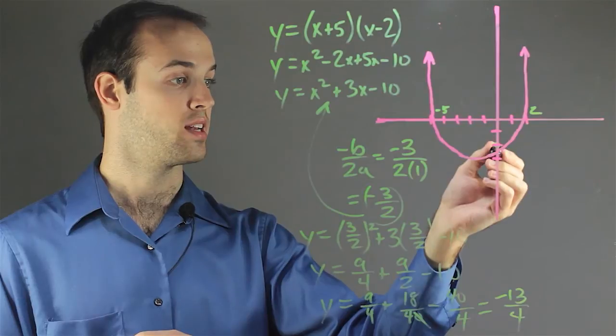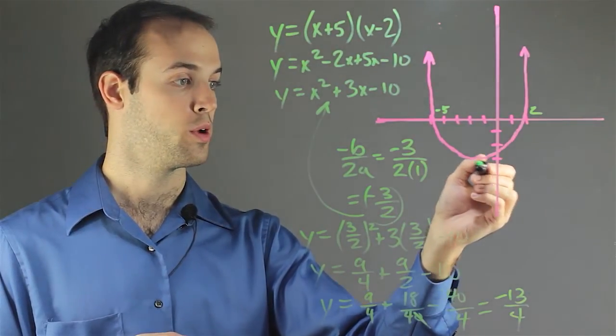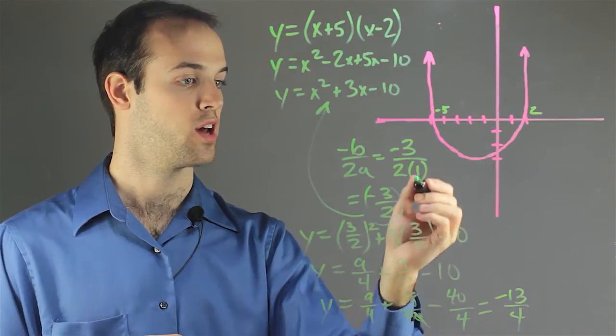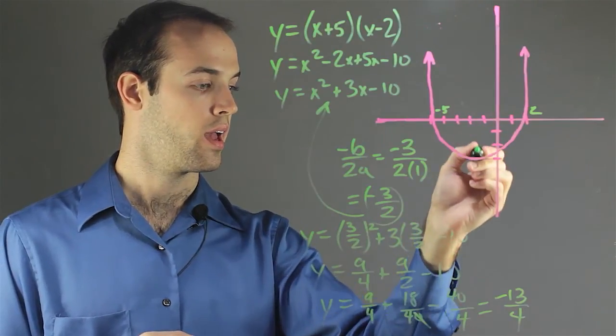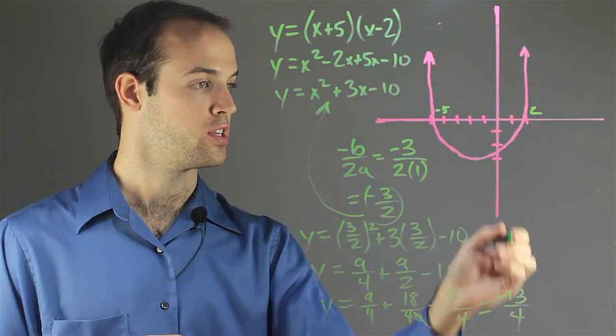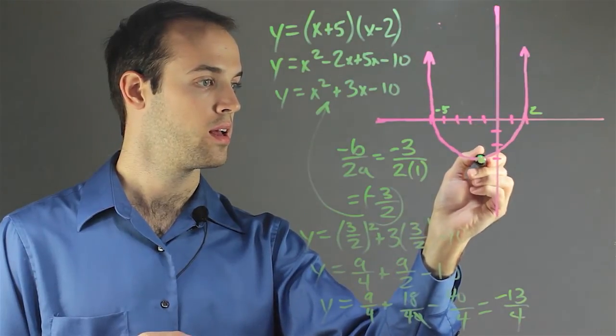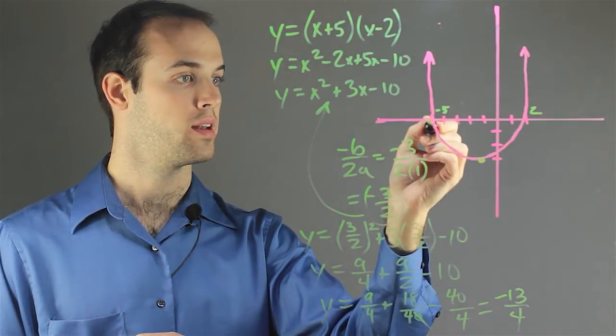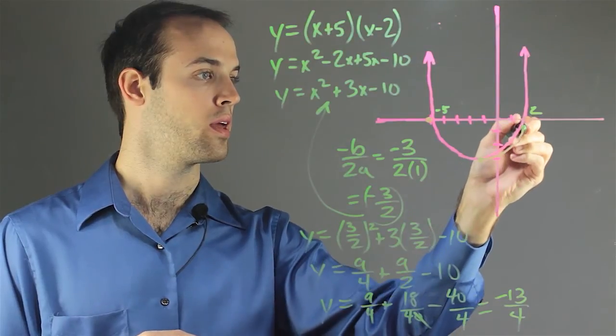And you can see also if we take negative 13 fourths, which is about 4 and a quarter, we would be right around the vertex for the graph that we were given. So I'm going to start with negative 3 halves and negative 13 fourths as my coordinates. And I'm going to get right about here. And I know that my x-intercepts must be at negative 5 and 2. And I would graph from there.